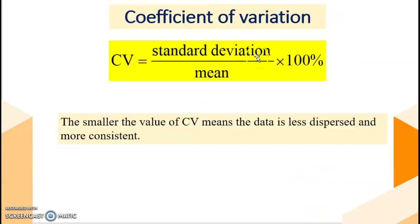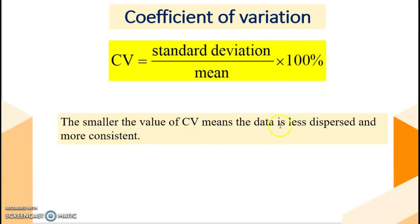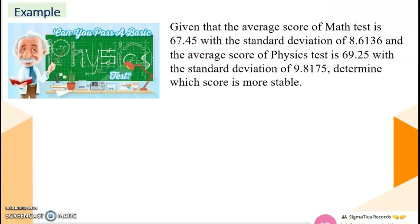Next, coefficient of variation. The formula is standard deviation divided by mean, multiplied by 100%. The smaller the value of CV, the less dispersed the data is and the more consistent it is.